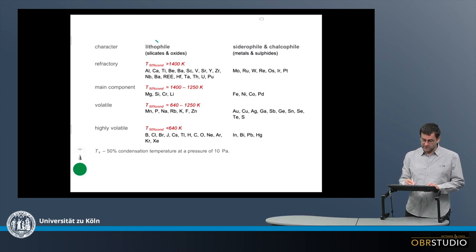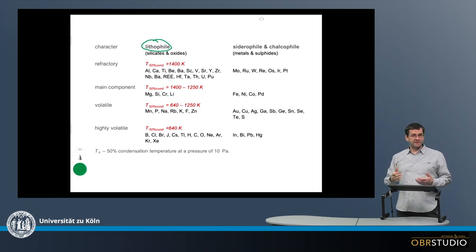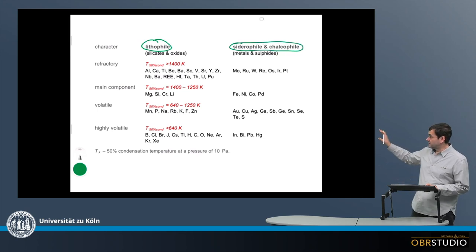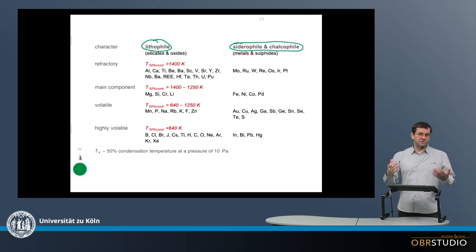The first is the lithophile elements. These elements occur in the silicates and in the oxides. The second group are the siderophile and the chalcophile elements. These elements constitute the metal and sulfide phases in the meteorites.